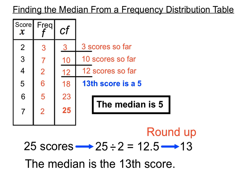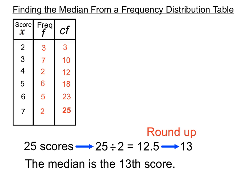To make this clearer, we'll also approach it from another direction, still using the cumulative frequency column, but by writing out some of the scores. We're looking for the 13th score as our median. Writing out the scores: there are three twos, then seven threes — one, two, three, four, five, six, seven — so far we have ten scores.